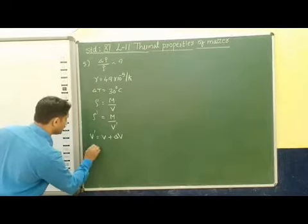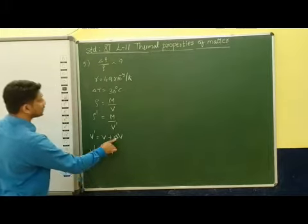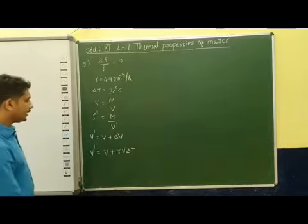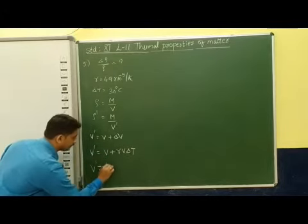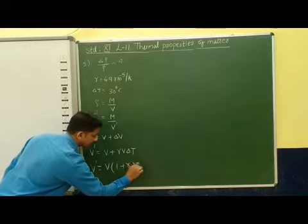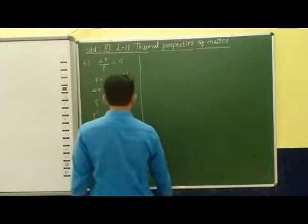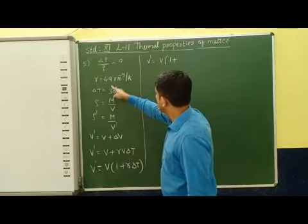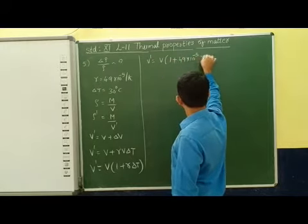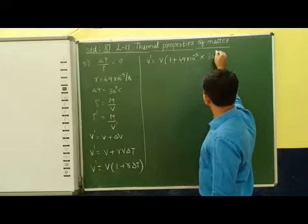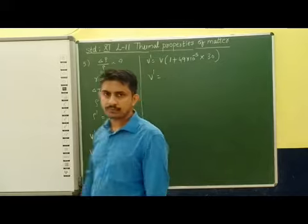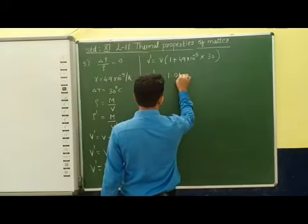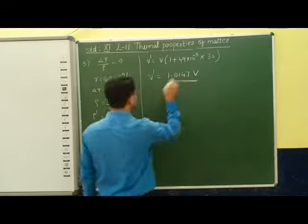From this we can express V' as V plus delta V. The volume expansion gives us delta V equal to gamma times V times delta T. So V' is equal to V plus gamma V delta T, which means V' equals V multiplied by (1 + gamma delta T). Substituting the values, V' equals V into (1 + 49 × 10⁻⁵ × 30), giving us V' in terms of V.